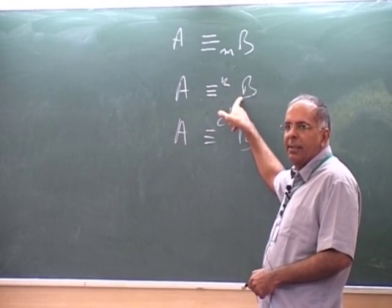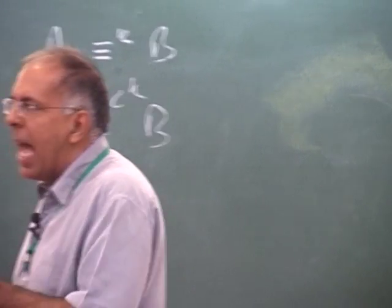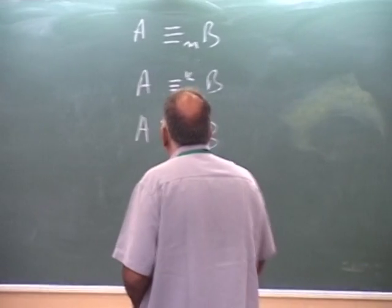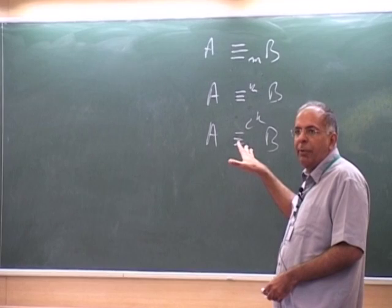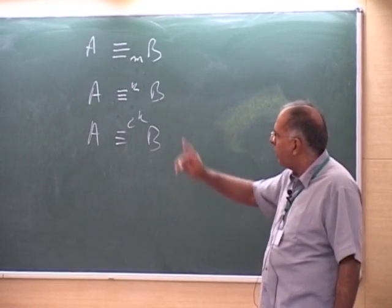You can prove, by essentially the same method used for IFP, that for any formula of fixed-point logic with counting there is a k such that if A and B are C^k-equivalent, then they are not distinguished by that formula. You unfold the fixed points up to the size of the structure, unfold the counting terms into counting quantifiers, and the total number of variables needed is bounded by about twice the number of variables in the original formula. To prove something is not definable in fixed-point logic with counting, we just need to show it's not invariant under C^k-equivalence for any value of k.